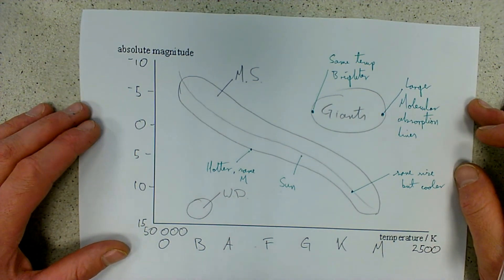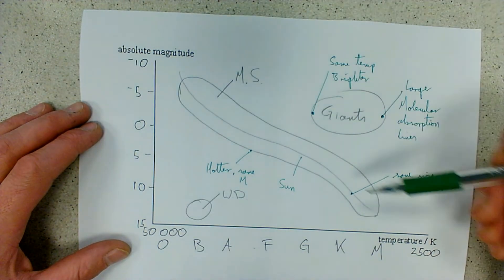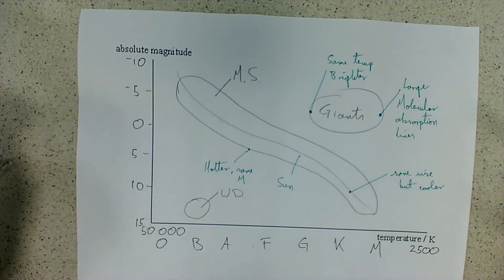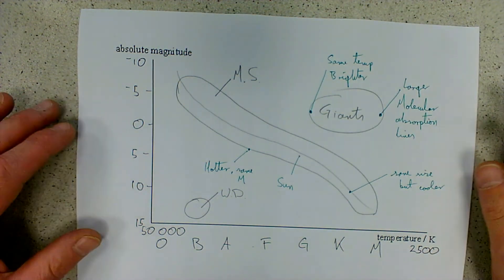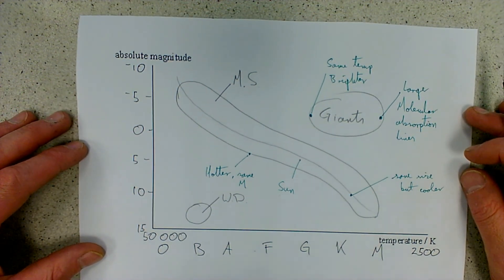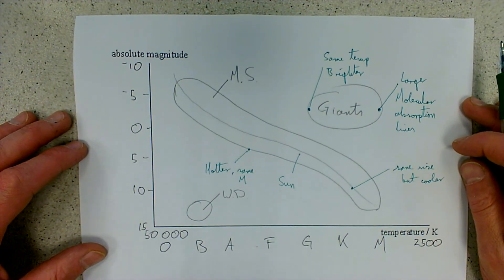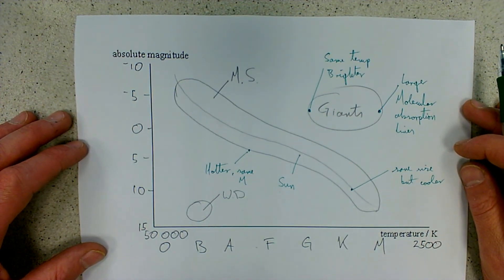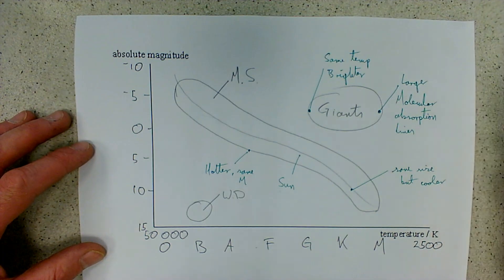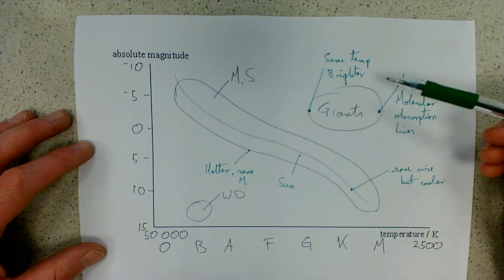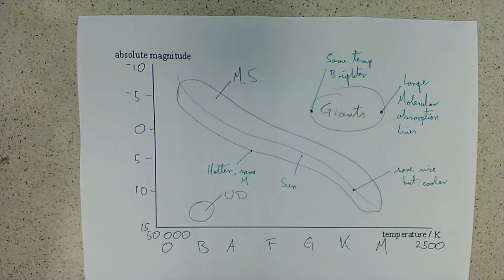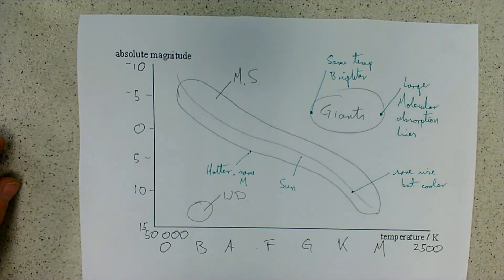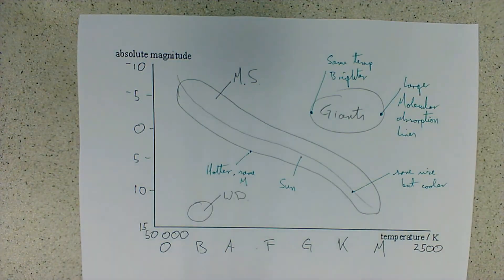So by understanding how this Hertzsprung-Russell diagram works and by learning the shapes of these different parts of the Hertzsprung-Russell diagram, we can draw it confidently and also use it confidently to help us compare the properties of different stars just based on small amounts of information such as their size or the spectral class. It's a very useful tool to allow us to make direct comparisons of two different stars. So practice drawing it and good luck in your exams.